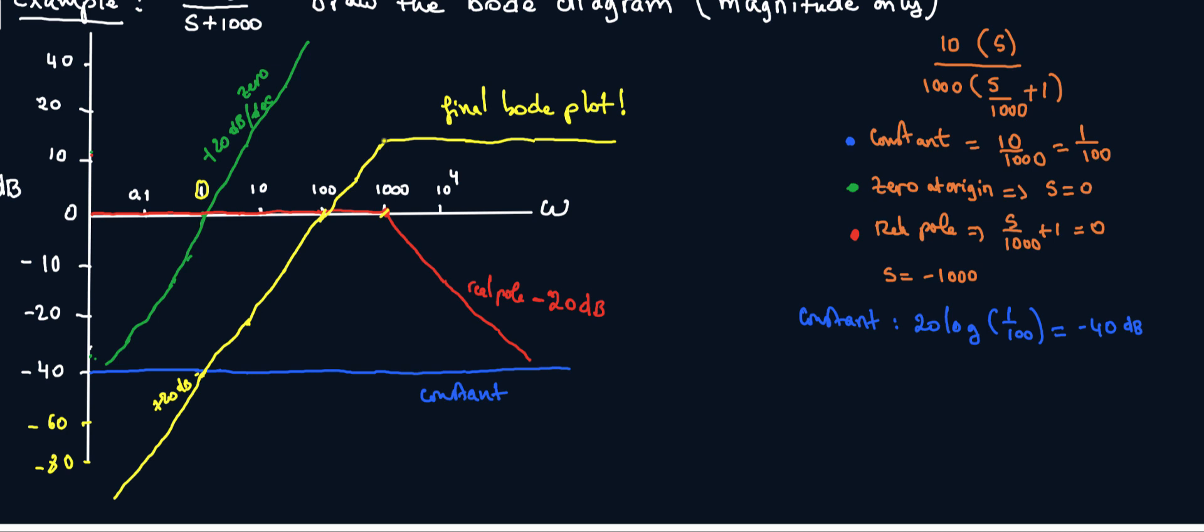And we start adding again. What are we adding? We adding a 20 plus dB slope and a minus 20 dB. That's zero. And that's my final plot, final plot.